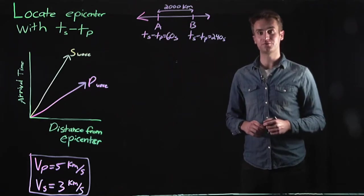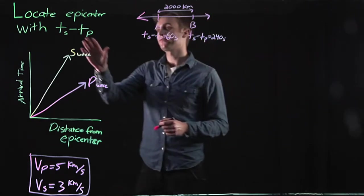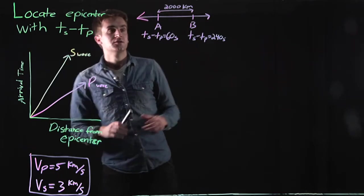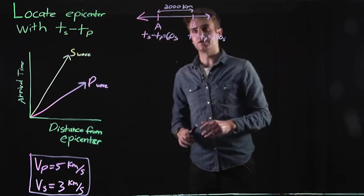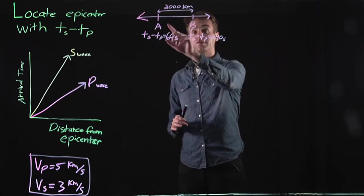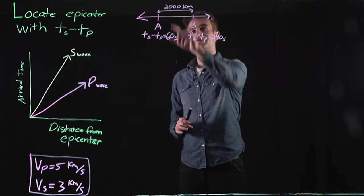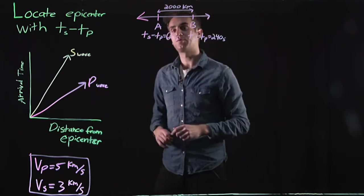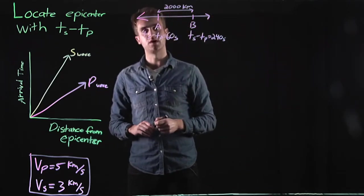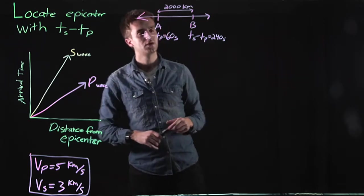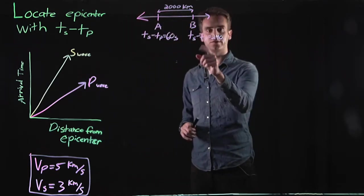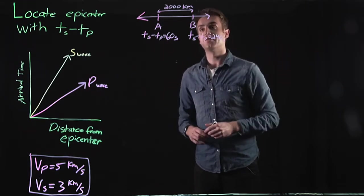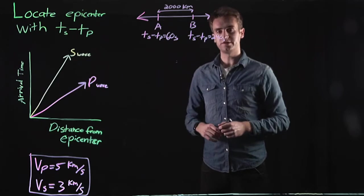How can we locate the epicenter of an earthquake knowing only the difference in the arrival times of the S and the P wave? Let's say we have two seismic stations, Station A and Station B, separated by 2,000 kilometers. Station A reports a difference in arrival time between the S and P wave of 60 seconds, and Station B reports this difference to be 240 seconds. Knowing this, how can we locate the epicenter of the earthquake?